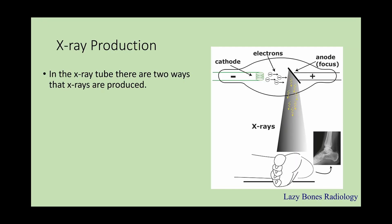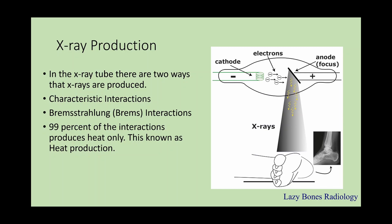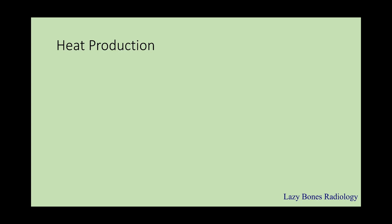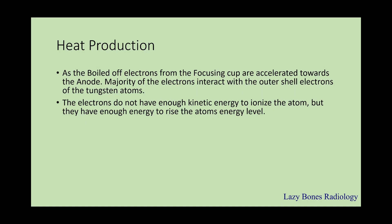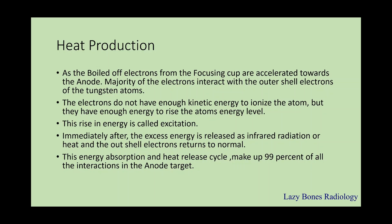This brings us to the x-ray production. In the x-ray tube, there are two ways x-rays are produced: characteristic interactions and Bremsstrahlung interactions. 99% of the interactions only produce heat — this is known as heat production — while only 1% of the interactions result in making x-rays. As the boiled-off electrons from the focusing cup are accelerated towards the anode, the majority of electrons interact with the outer shell electrons of the tungsten atoms. These incoming filament electrons do not have enough kinetic energy to ionize the atom, but they do have enough energy to raise the atom's energy level. This rise of energy is called excitation. Immediately after, the excess energy is released as infrared radiation or heat, and the outer shell electrons return back to normal. No x-rays are produced during heat production, only heat release.